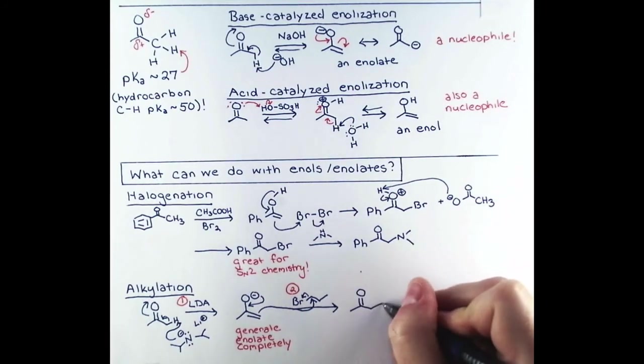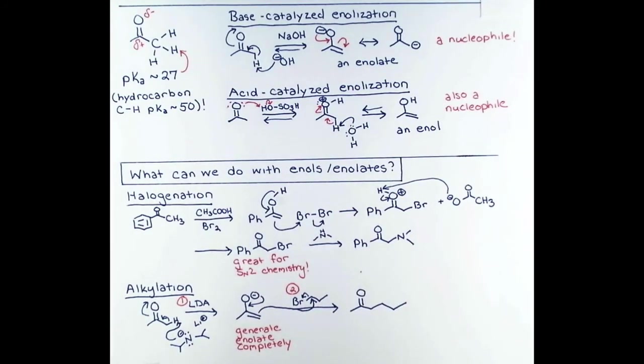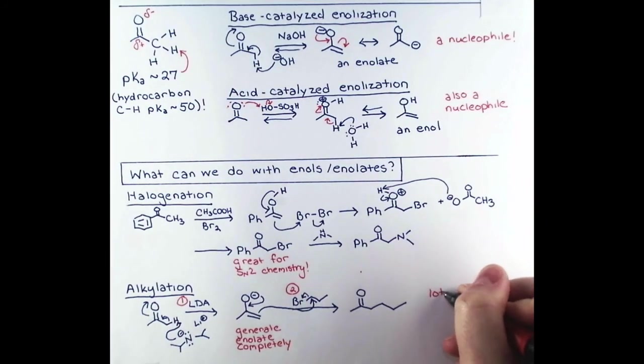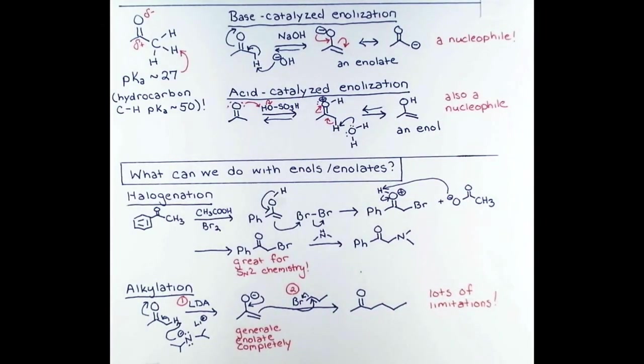This reaction works best with alkyl halides that are not hindered, so primary alkyl halides are a good choice for this reaction. Before we wrap up, I do need to mention that enolate alkylation has lots of limitations, and in another lesson, we will go over these limitations and how to work around them.